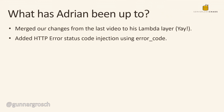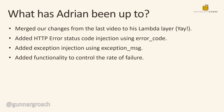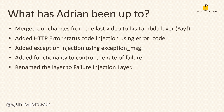He then added HTTP error status code injection using an error code, so now we're able to inject a status code into our function instead of just latency. He also added exception injection using an exception message, so we're able to inject certain exceptions into the function and essentially break it while running. He added functionality to control the rate of failure — instead of injecting failure on every invocation, we can set a rate so it only triggers on half of invocations, for example. He also renamed the layer to the 'failure injection layer', which makes more sense since it's no longer just latency injection.